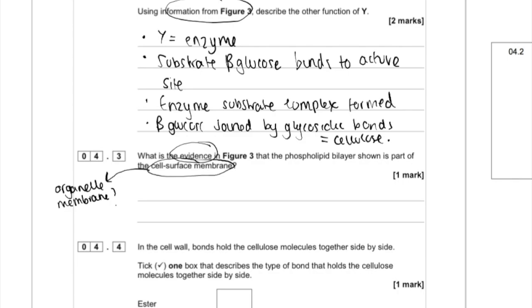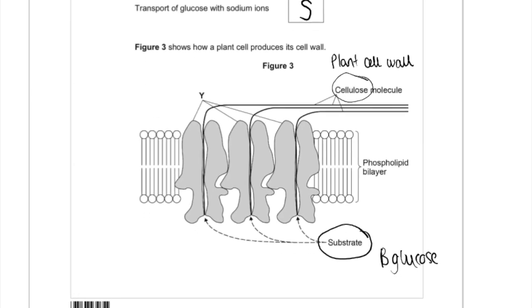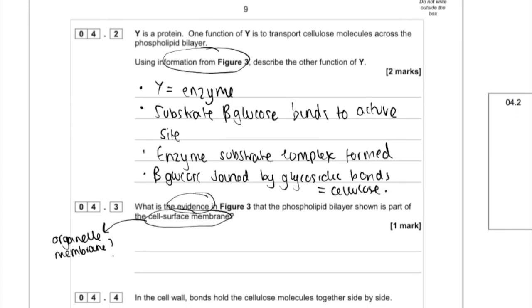So they could be talking about an organelle membrane, for example, the membrane surrounding the nucleus or the mitochondria or something like that. So we've got to find some evidence on here. I think the fact that there's cellulose there, we know cellulose makes up the plant cell wall. Plant cell walls are on the edge of cells, so that's our evidence.